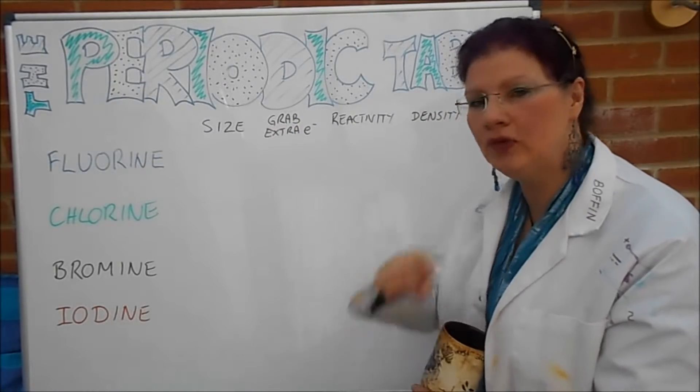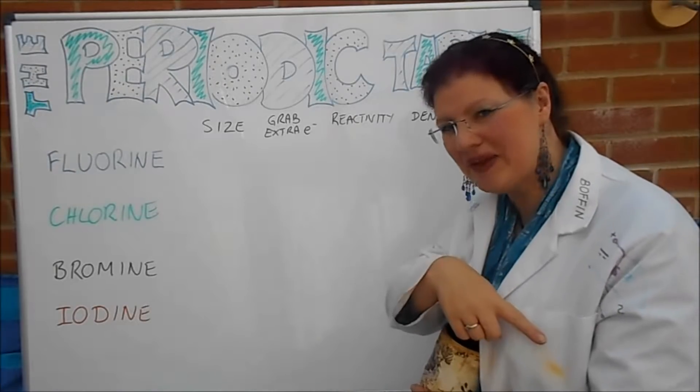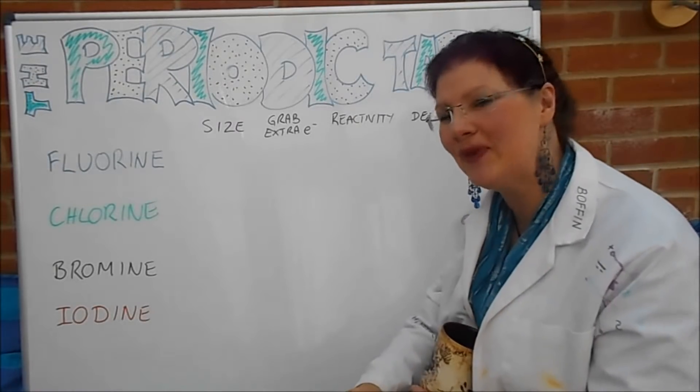In this video we're talking about the Group 7 elements down this side of the Periodic Table. Here's a quick recap of where they come.